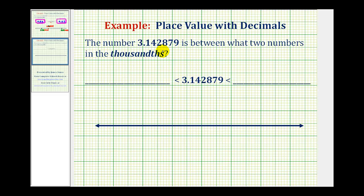The number 3.142879 is between what two numbers in the thousandths place value? So first, looking at the given number, we need to recognize that this two here is in the thousandths place value.